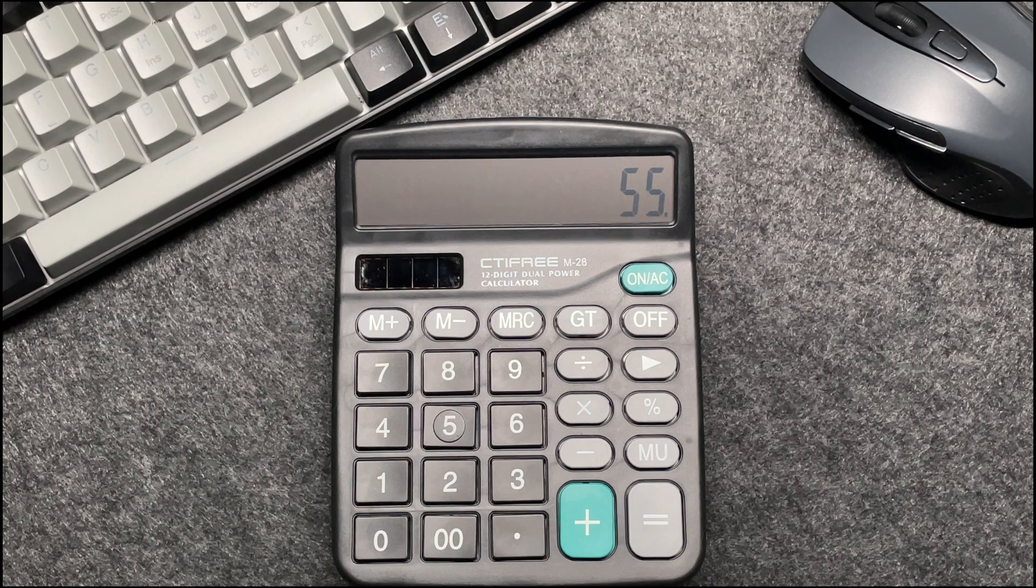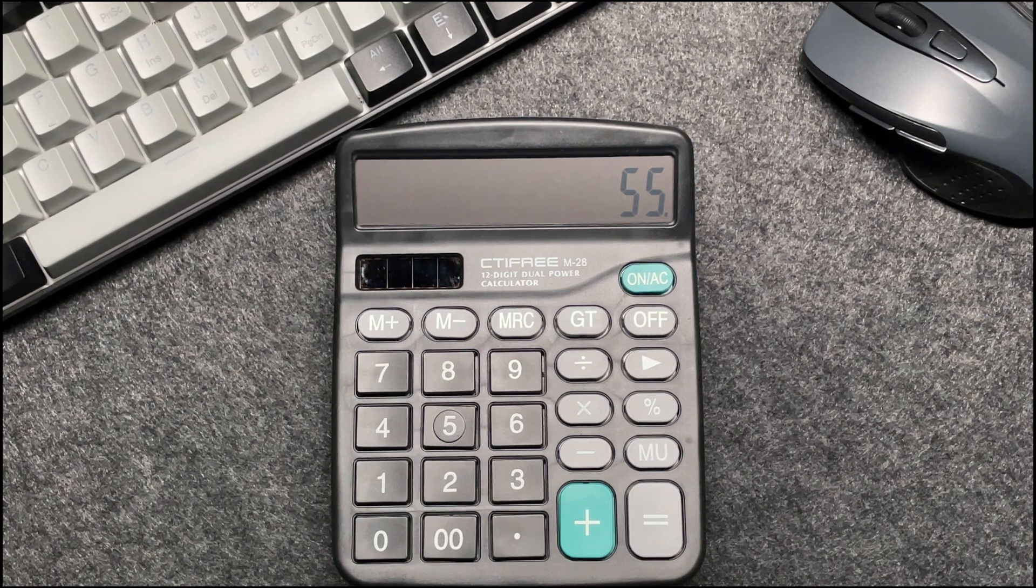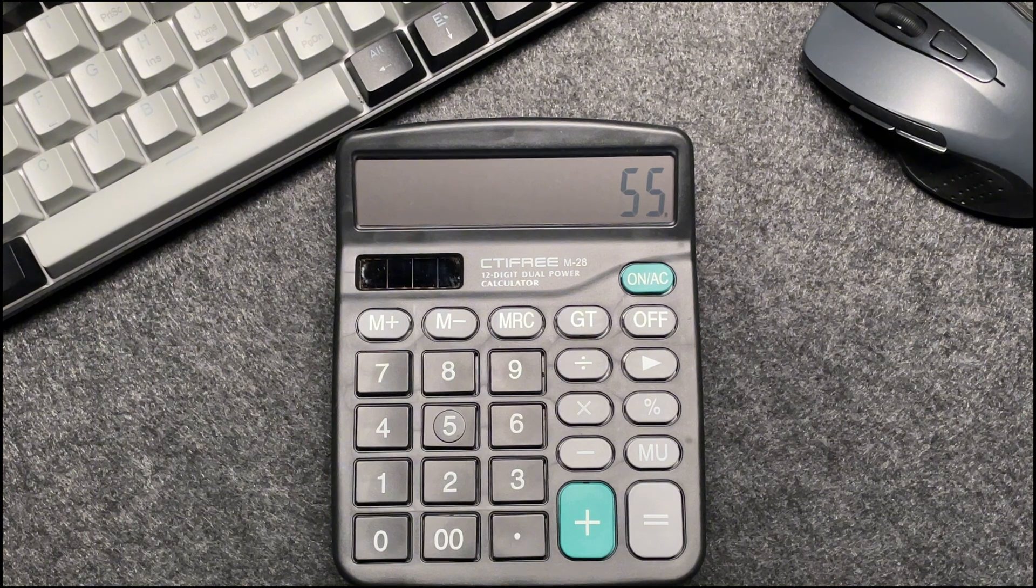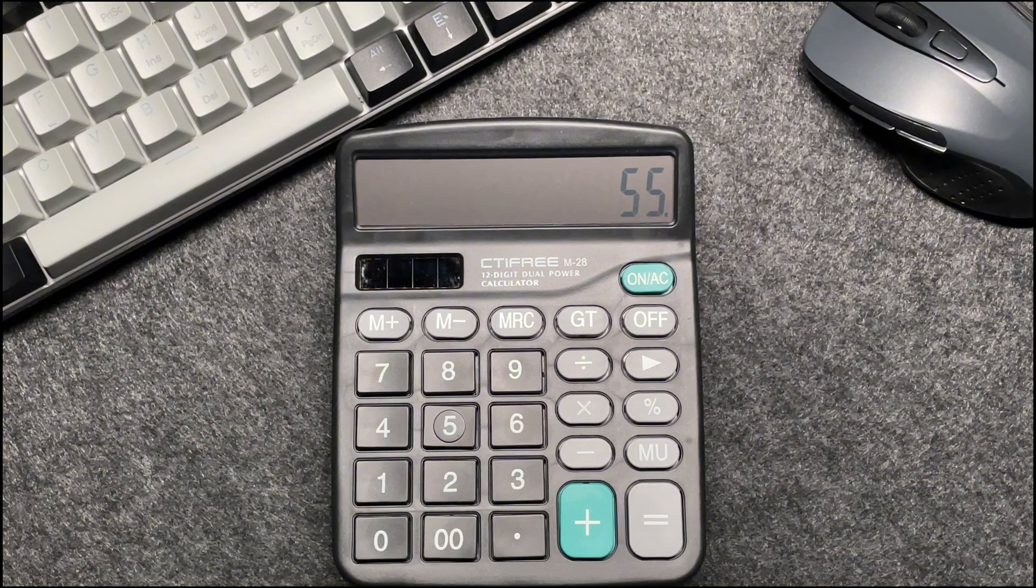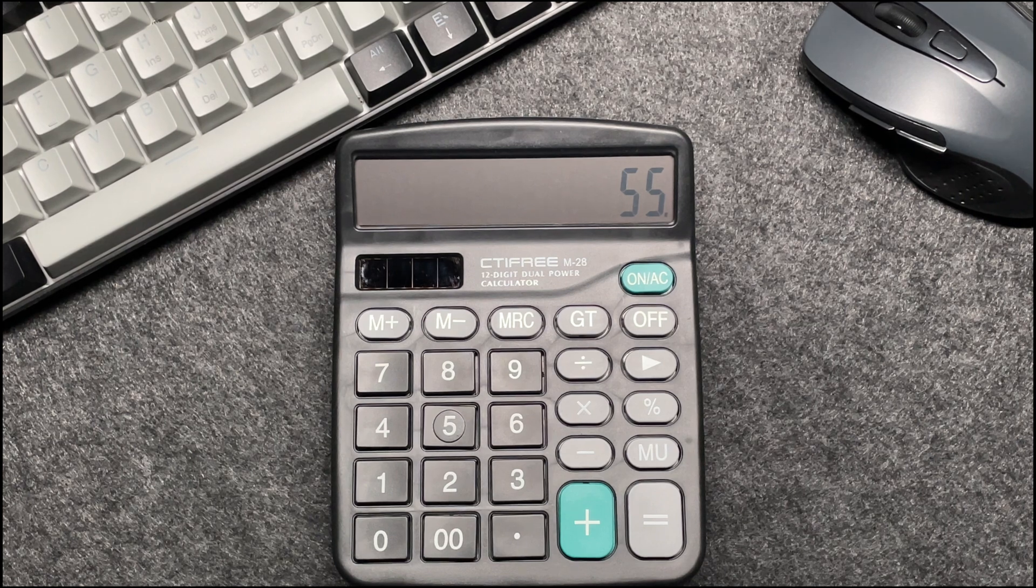By multiplying the original price by 55, then using the percentage button, you are effectively calculating 55% of the original price, which gives you the final amount after the discount.